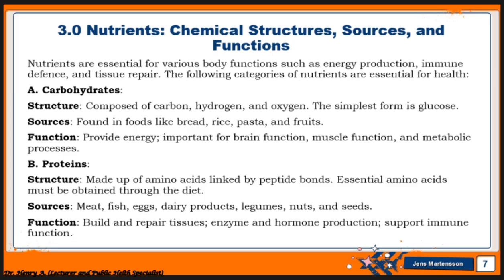Glucose is the simplest form of carbohydrates. It is the running fuel that comes to the cells of the system, and is utilized to provide ATPs that are further utilized for energy production. This brings to mind the glycolytic pathway, where glucose is formed either by glycolysis or gluconeogenesis, and it is important that you understand this pathway as well.